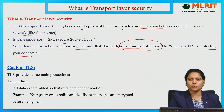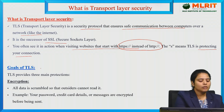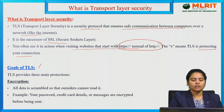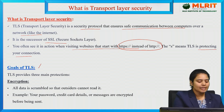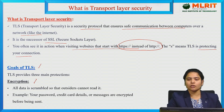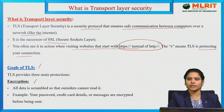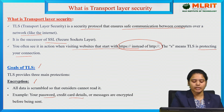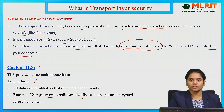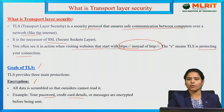TLS provides three main protections. The first is encryption. In encryption, the data is scrambled so outsiders cannot read what is happening inside. For example, passwords, credit card details, or any messages are encrypted before being sent.